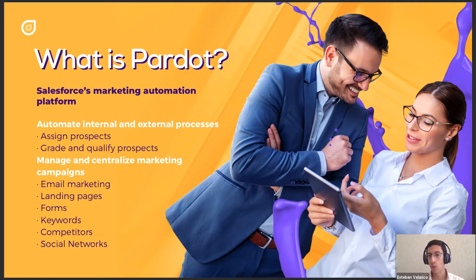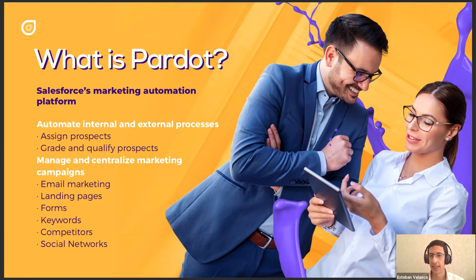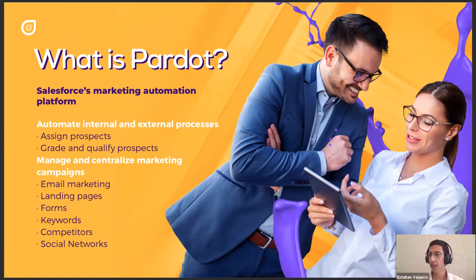There are a bunch of ways you can do this. You can do a round-robin assignment so that every single person on your sales team gets an equal amount of leads, or you can also assign more leads to those sales reps that are having better metrics or better sales. That's one of the simplest processes you can automate with Pardot.